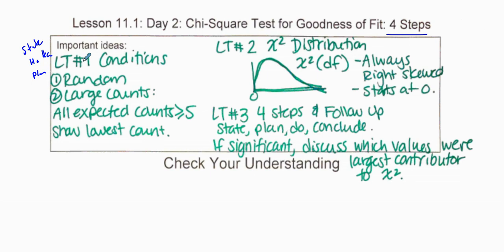For the plan, we're going to use a chi-square goodness of fit test — we could write GOF. And these are the conditions we're looking for.